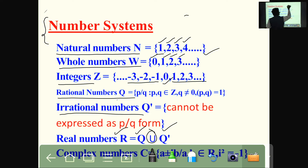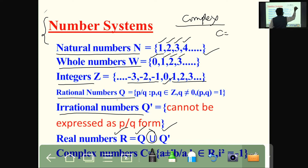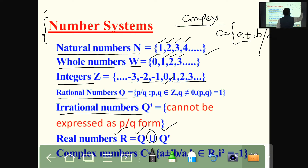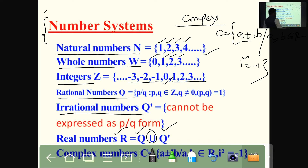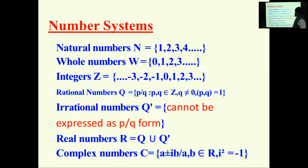What are the complex numbers? C equals the elements of the form A plus or minus iB, where A and B belong to real numbers, where i squared equals minus 1. So N is the natural numbers, W is the whole numbers, Z represents integers, then rationals, irrationals, real numbers, complex numbers. These are the number systems.